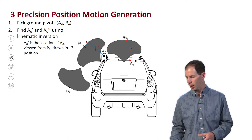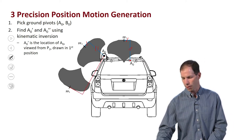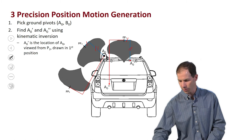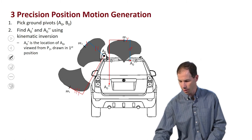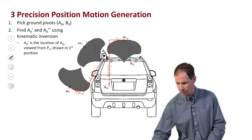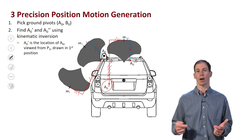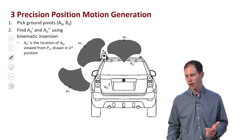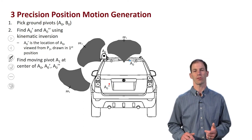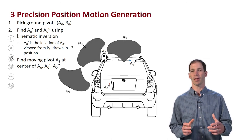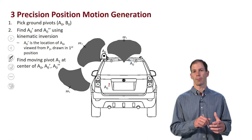I'll do the same thing to find A-knot double prime, but from the third position. So I have P3 back to A-knot, then draw that in position 1 — three dashes on two of these lines and four on the longer one. That defines A-knot double prime. Once I've defined A-knot, A-knot prime, and A-knot double prime, if I find the center of those three points, that will be my moving pivot. So this is part of the kinematic inversion — I now find the center of those three points to locate A1.